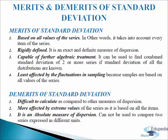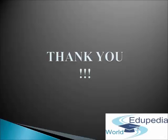Next, demerits of standard deviation: it is difficult to calculate as compared to other measures of dispersion. It is unduly affected by extreme values of the series as it is based on all items. And lastly, standard deviation as an absolute measure cannot be used to compare two series expressed in different units. These are the merits and demerits of standard deviation. Thank you for watching Edupedia World videos.